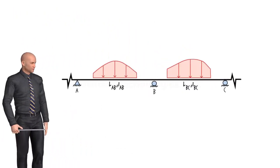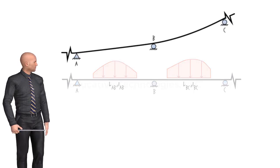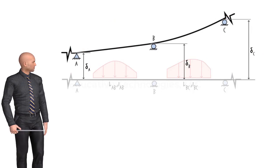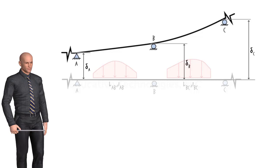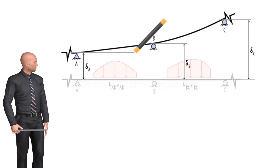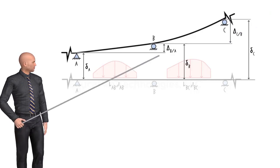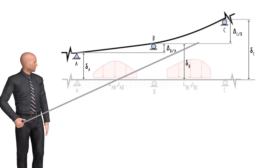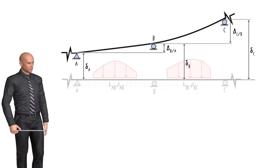Consider two consecutive spans resting on three supports in a continuous beam. Suppose each support undergoes a small amount of vertical displacement. Let delta A, delta B, and delta C denote the displacements. We are going to use the slope deflection formulation to account for these displacements in the 3-Moment Equation. We refer to the difference between delta A and delta B as delta BA, and use delta CB to refer to the difference between delta B and delta C.